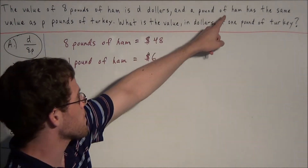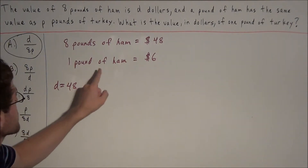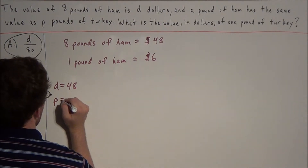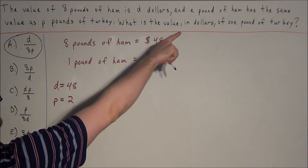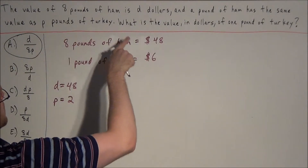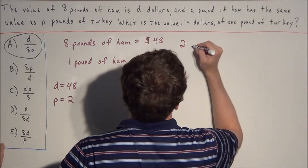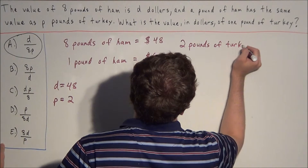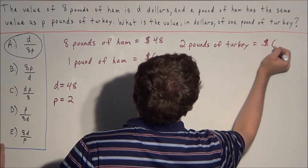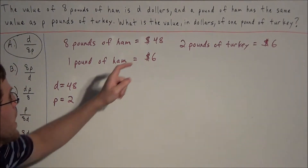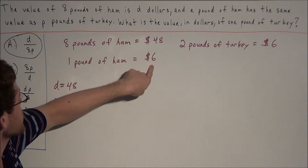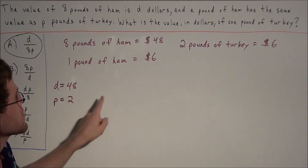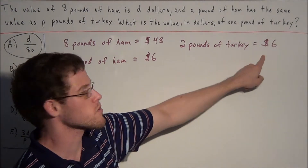Re-reading the next line: a pound of ham has the same price as p pounds of turkey. Let's set p equal to 2. So this reads: 2 pounds of turkey is equal to 6 dollars. A pound of ham costs 6 dollars and we set p equal to 2, so we arrive at the equation 2 pounds of turkey equals 6 dollars.